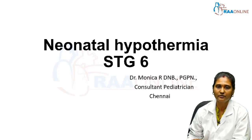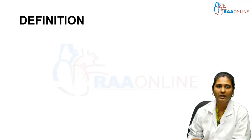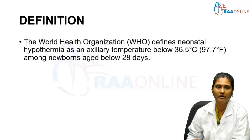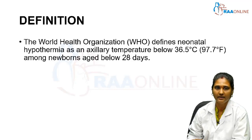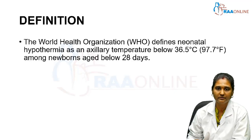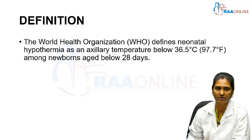Any breach in the thermoneutral environment leads to neonatal hypothermia. According to the WHO, neonatal hypothermia is defined as an axillary temperature below 36.5 degrees centigrade (97.7°F) among newborns aged below 28 days — that is, less than one month old.